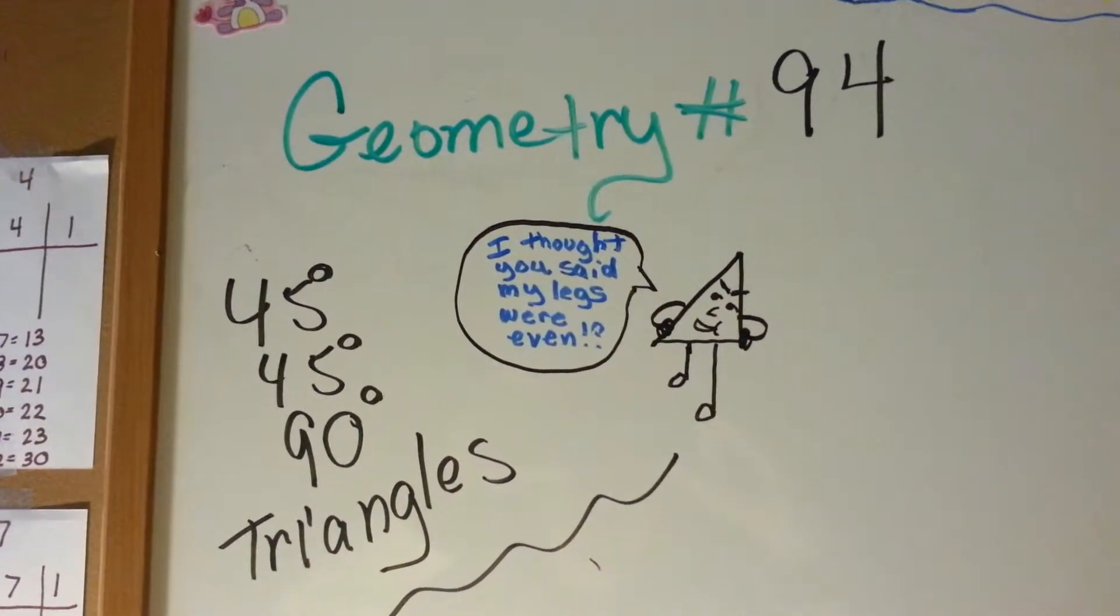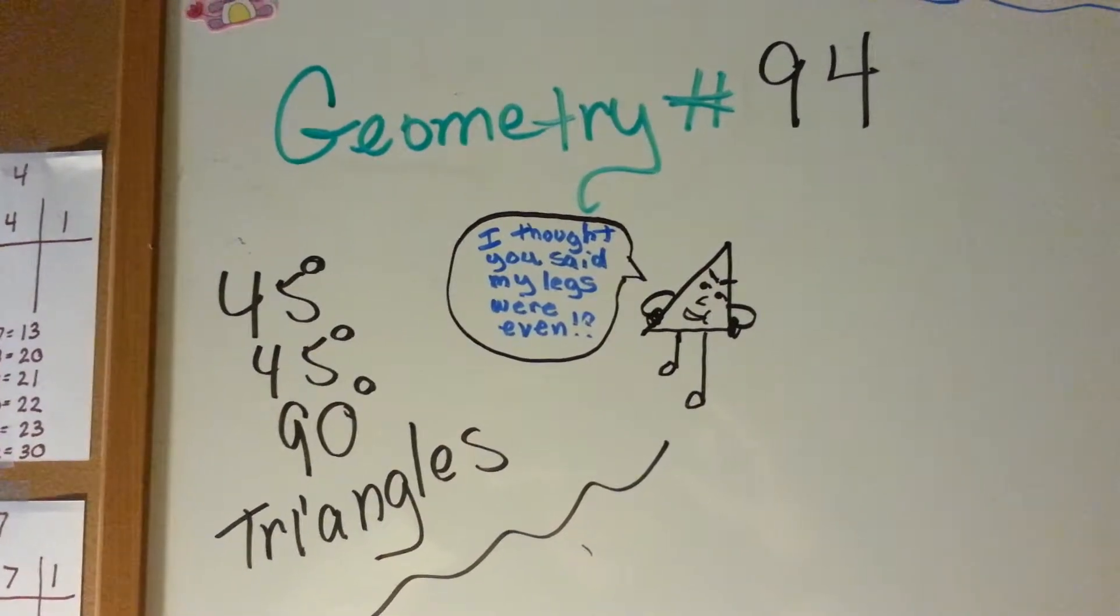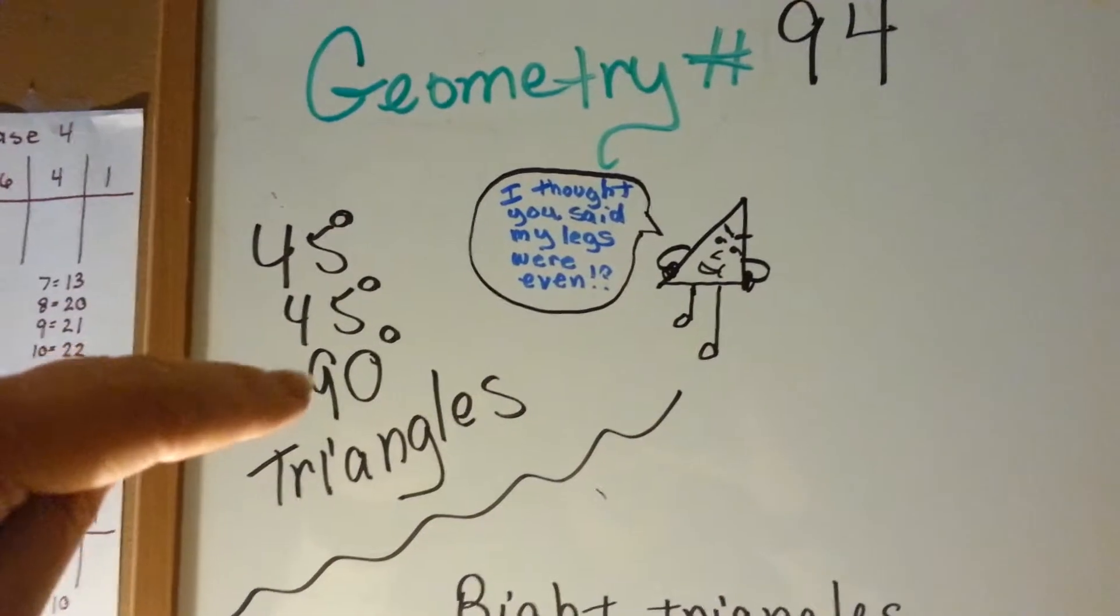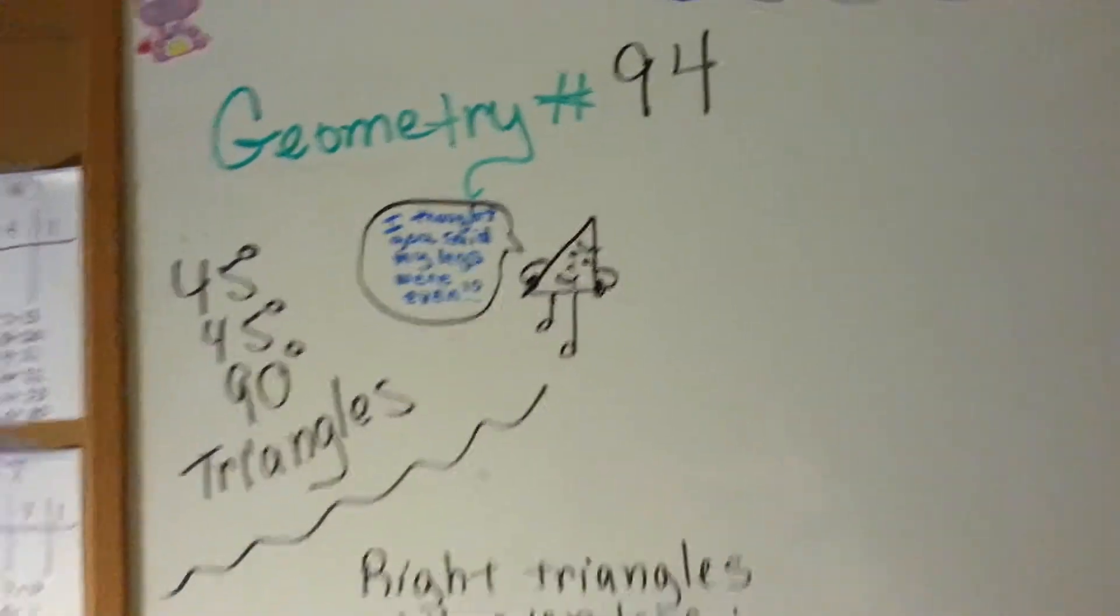45 degrees, 45 degrees, and 90 degree triangles. These are right triangles, of course, because we can see there's a 90 degree corner right there.